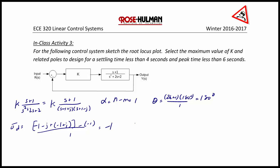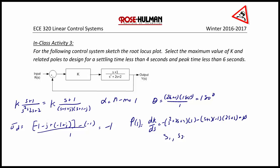Now we find our break-in and break-away points. The polynomial, which is the derivative of k with respect to s, is equal to negative (s² + 2s + 2) times 1 minus (s + 1) times (-1)(2s + 2), set equal to 0. Solving for s₁ and s₂ gives 0 and -2 as the break-away points.